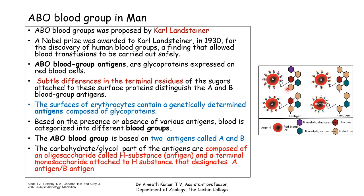If you take this particular RBC, you can see four sugar units attached, which form something called the H antigen. This H antigen is an oligosaccharide composed of four monosaccharide residues. The terminal-most sugar of the H substance is a fucose sugar — a fucose is attached at the terminal region of the H substance.